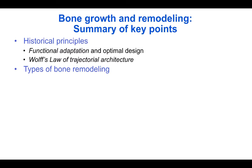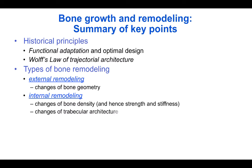And we looked at the two different types of bone remodeling: external remodeling which involve changes in bone geometry, and internal remodeling which involve changes in bone density or trabecular architecture and hence changes in strength or stiffness.